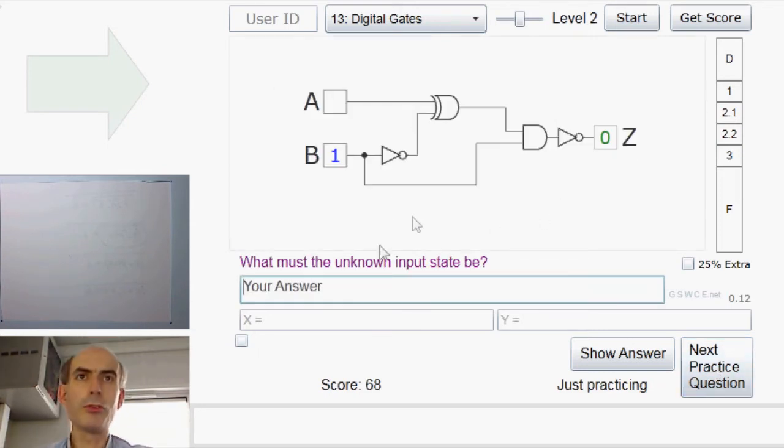That's more interesting. What must the unknown input state be? You have to kind of work backwards. The output is a 0. That's an inverter. Which means this output of this AND gate here is a 1. The only time you get a 1 at the output of an AND gate is when both inputs are a 1. Well, clearly this input is a 1. So this input must be a 1 as well. Now that's an XOR gate. It only gives you a 1 when both of its inputs are different. So we know that these two are different. We know this bottom one here is a 0. Because it's B through an inverter. So that is 0. So this must be a 1.